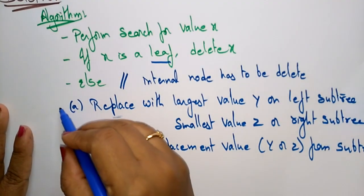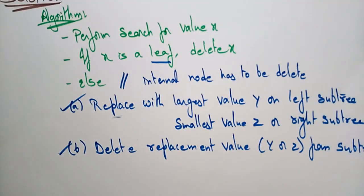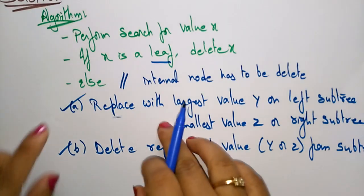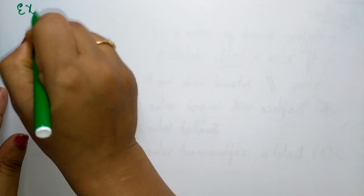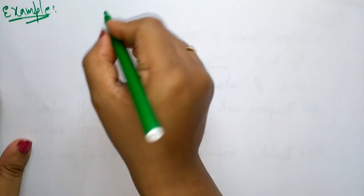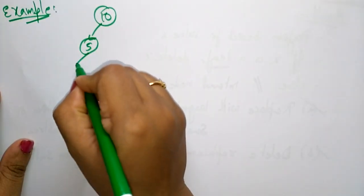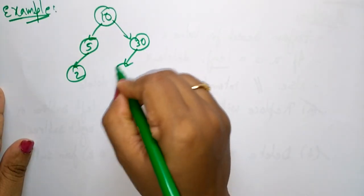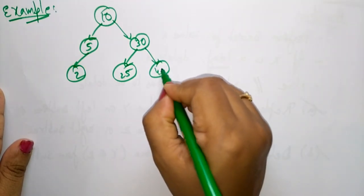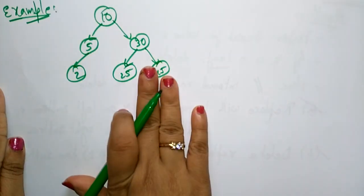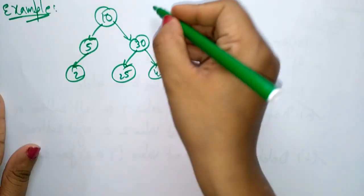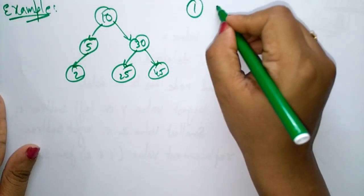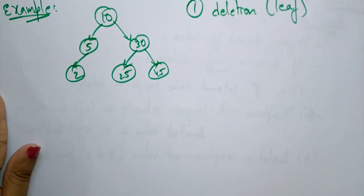Let me take one example so you will understand. If it is a leaf node, directly you can delete. If it is not a leaf node — whether it is an internal node or a root node — you have to follow those two principles. I'm taking one binary search tree: 10, 5, 2, 30, 25, 45. The left side should be less than the root node and the right side greater. Now let's take the first condition: the deletion element is a leaf node.